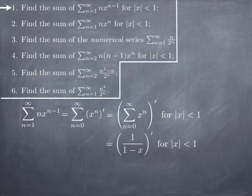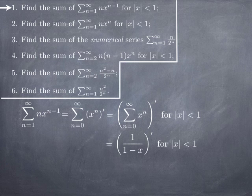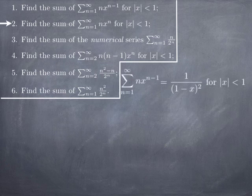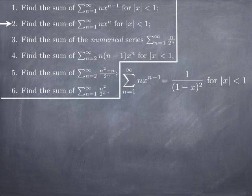We know how to differentiate this function: 1 minus x to the power negative 1. When we differentiate, we get negative(1 minus x)^(−2) multiplied by the derivative of (1 minus x), which is negative 1. The two negatives cancel and we get (1 minus x)^(−2), in other words 1 over (1 minus x)². This is valid as long as |x| < 1, so we have found our formula for the series from 1 to infinity of n·x^(n-1).